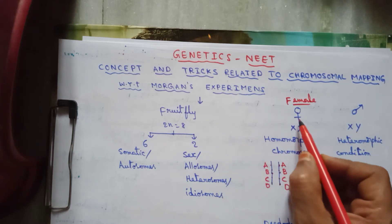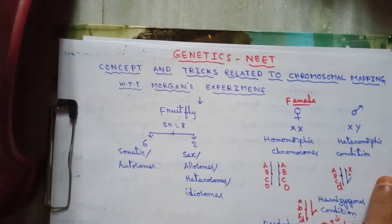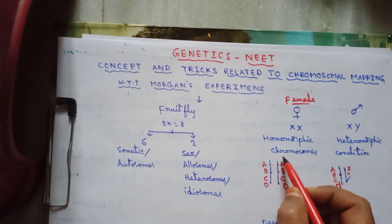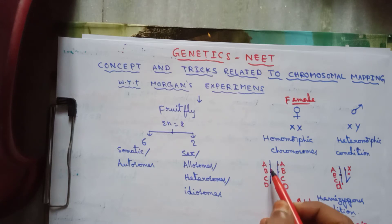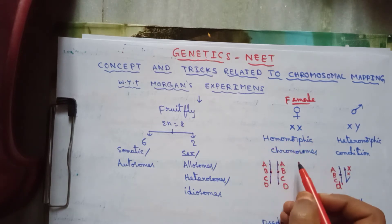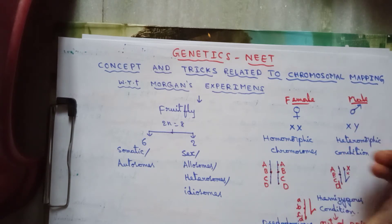In female fly, the sex chromosomes are two X chromosomes. Both X chromosomes are similar, hence this condition is called homomorphic condition. They are homologous to each other because the type of genes present on them, the gene location, and their position with respect to the centromere are similar to one another.